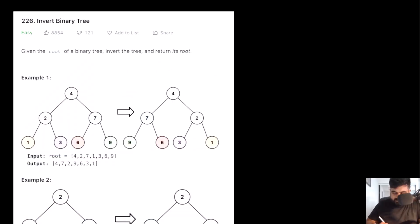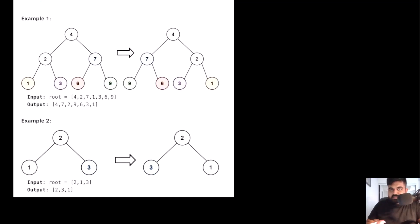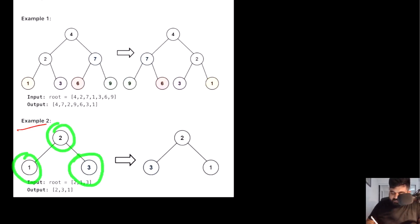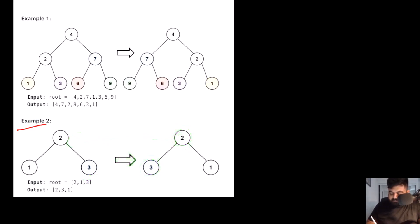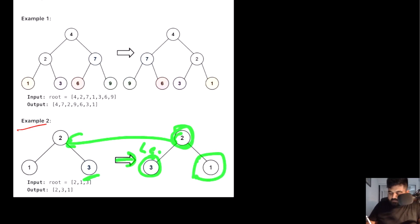This is a LeetCode easy problem and also a very well-liked problem on LeetCode. Basically, we are given the root of a binary tree and we need to invert the tree and return its root back. Let's understand this with a couple of examples. We will take this example where we have a tree with root 2, where 1 is the left child and 3 is the right child. If we invert this tree, 2 remains the root, but 3 — originally the right child — becomes the left child, and 1 — originally the left child — becomes the right child.